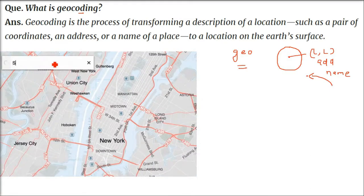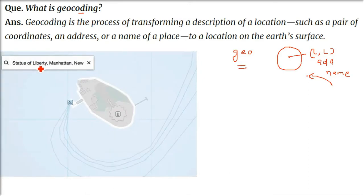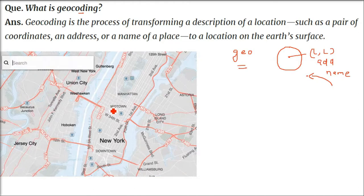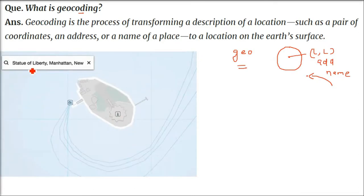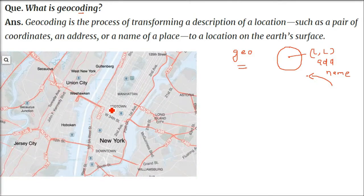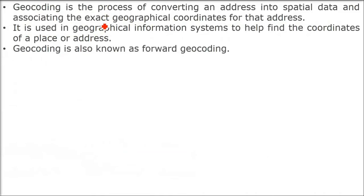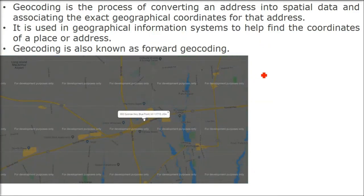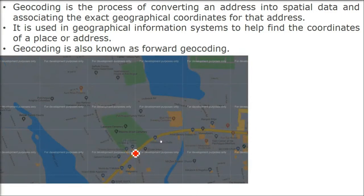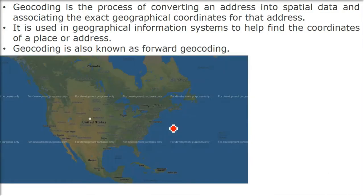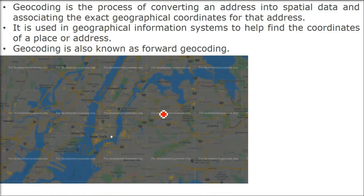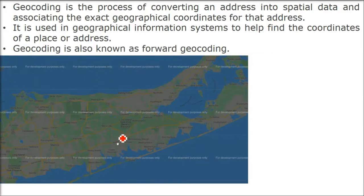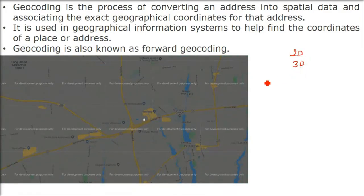Here is an example: this is a map, and when you place or enter a name, it takes you to the proper spatial location. It identifies that this is the location we are talking about. Geocoding is the process of converting an address into spatial data and associating the exact geographical coordinates for that address. On earth, everything has a location — latitude and longitude — and the metadata or attribute at that location tells us whose house it is or which office is there.